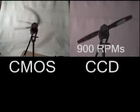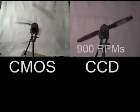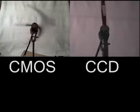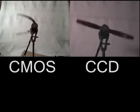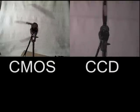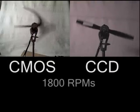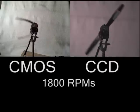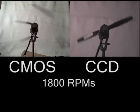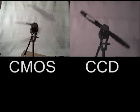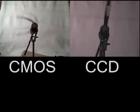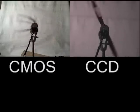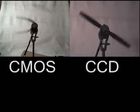Notice that as propellers reach rotation speeds of 900, 1800, 2700, and 3600 RPMs, they appear to stop moving. At these rotational speeds, the cameras acquire images when one of two propeller blades rotate through their arcs and come to be in the same position by the time the next consecutive image is captured.